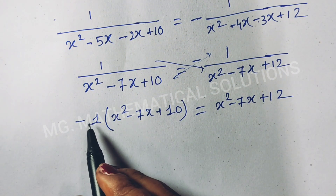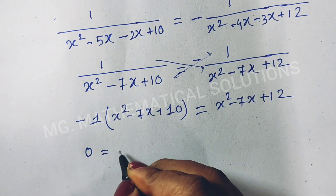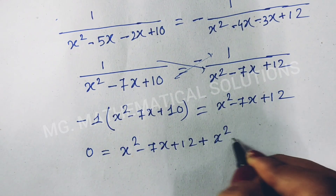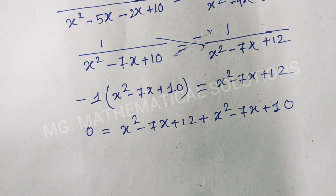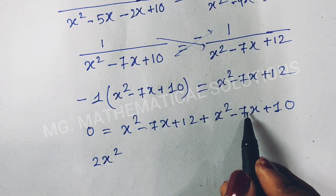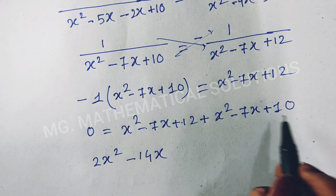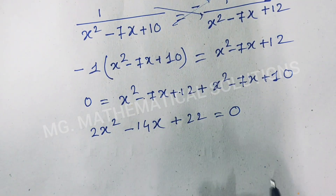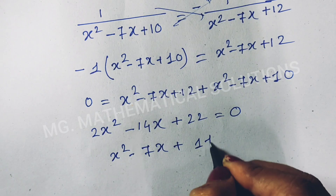Rearranging: 0 equal to x²-7x+12 plus x²-7x+10. So x² plus x² is 2x², minus 7x minus 7x is minus 14x, plus 12 plus 10 is plus 22, equal to 0. Dividing both sides by 2 gives x² minus 7x plus 11 equal to 0.